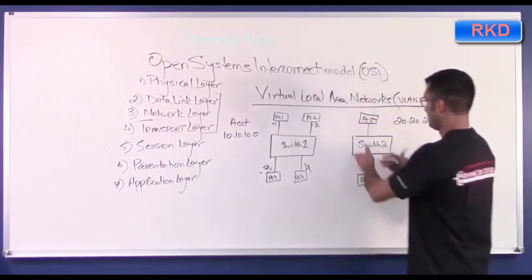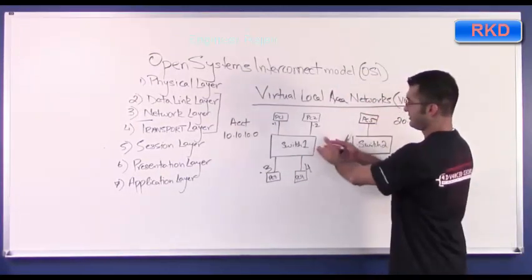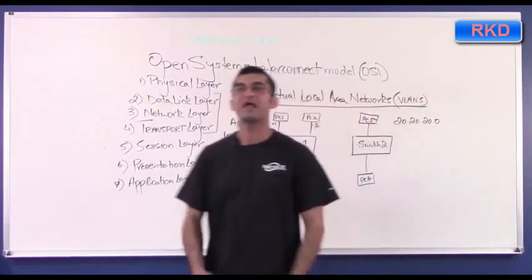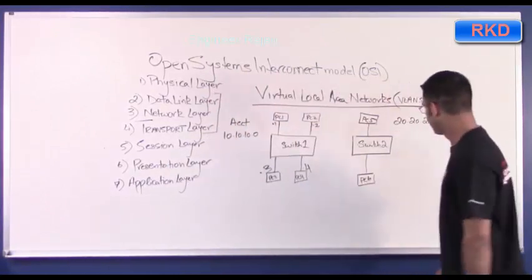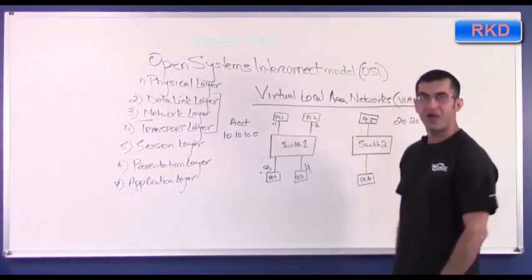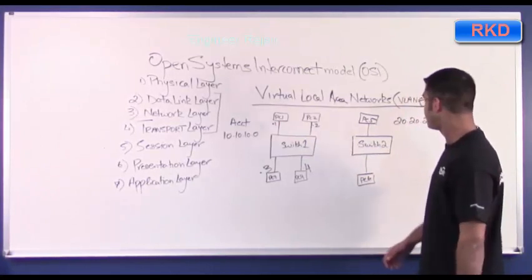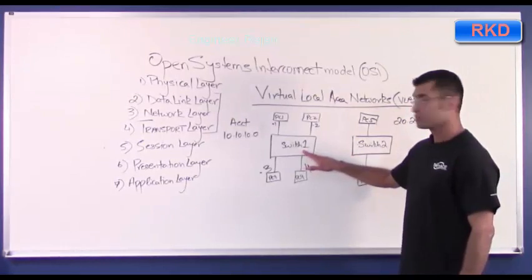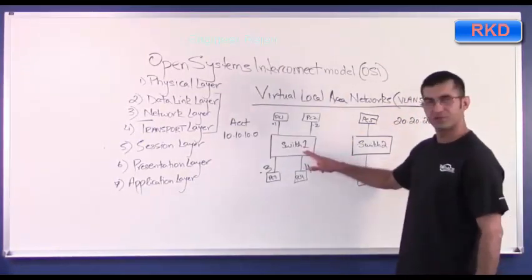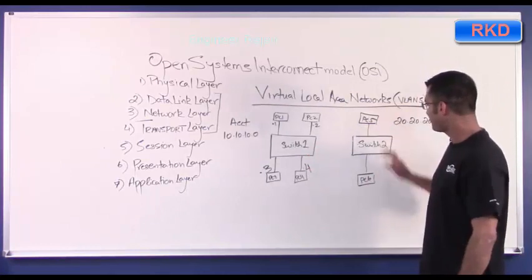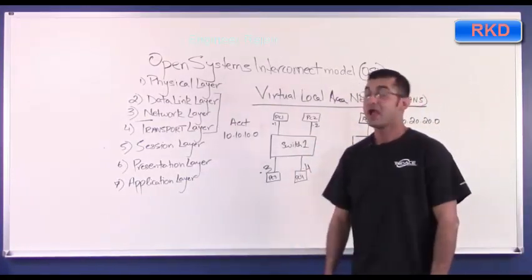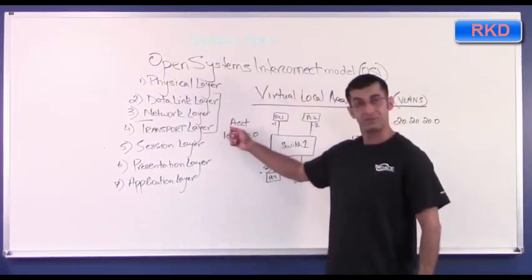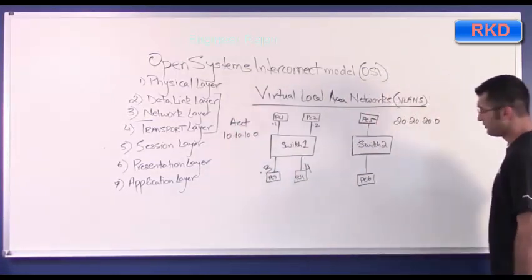Why can't we put PC5 and PC6 on Switch 1? Well, we can't because the management department has a different IP addressing scheme. If PC1 sends out a broadcast at some point, everybody would receive it if they were all attached to Switch 1. So if I put PC5 and PC6 on Switch 1, they would receive that broadcast. However, they're supposed to be a separate department from accounting.